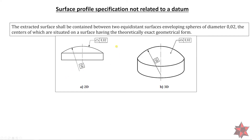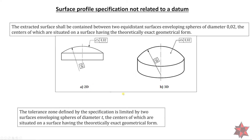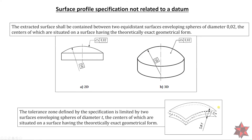Here is the example on the 2D drawing and on the 3D model. We can see the radius of the sphere as a basic dimension on the 3D model. The tolerance zone is limited by two surfaces enveloping spheres of diameter t, the centers of which are situated on a surface having the theoretical exact geometrical form — that is the nominal surface. This tolerance zone works exactly like flatness, but the surface is curved, which is why it needs to be evaluated as a profile of a surface.